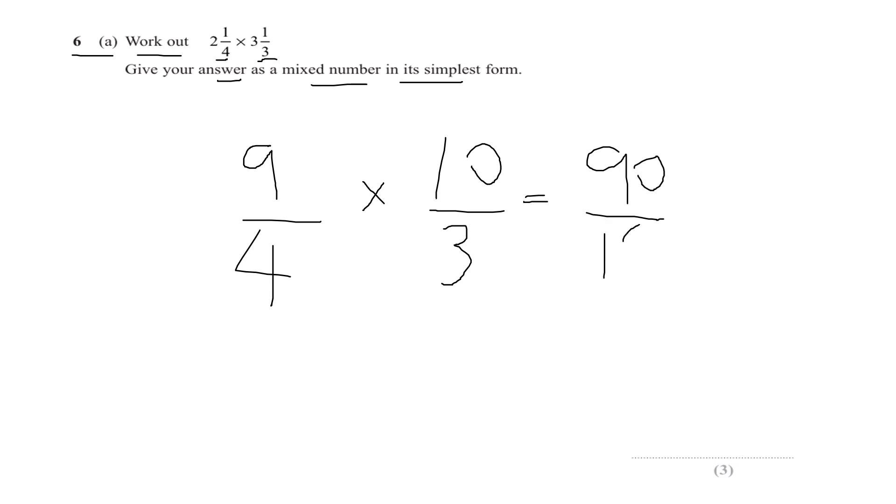I can divide top and bottom by two because they're both even, so I get forty-five sixths. I can divide them both again by three because they're both divisible by three. So forty-five divided by three is fifteen.